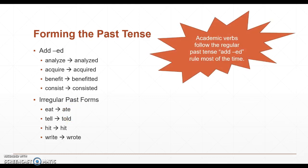Some things you should know. Academic verbs usually follow the regular past tense add '-ed' rule most of the time. So if you look at this list again, right here, these words are all actually academic words. And as you can see, they follow the regular add '-ed' rule for making past tense.